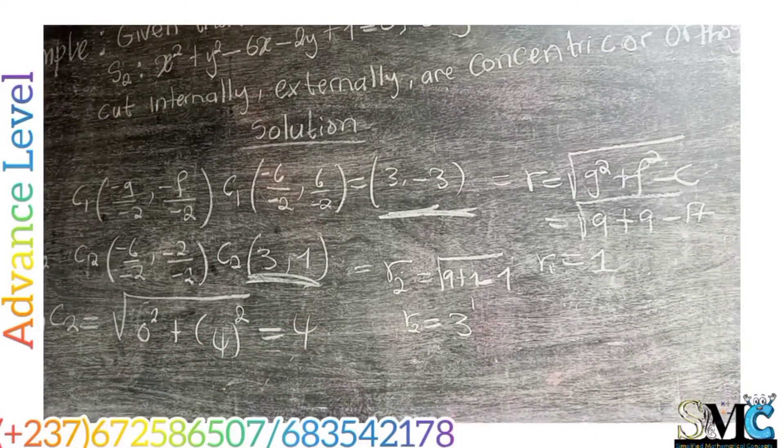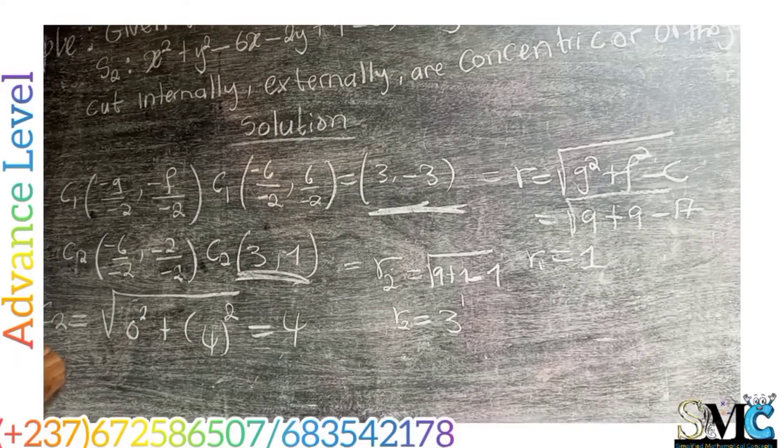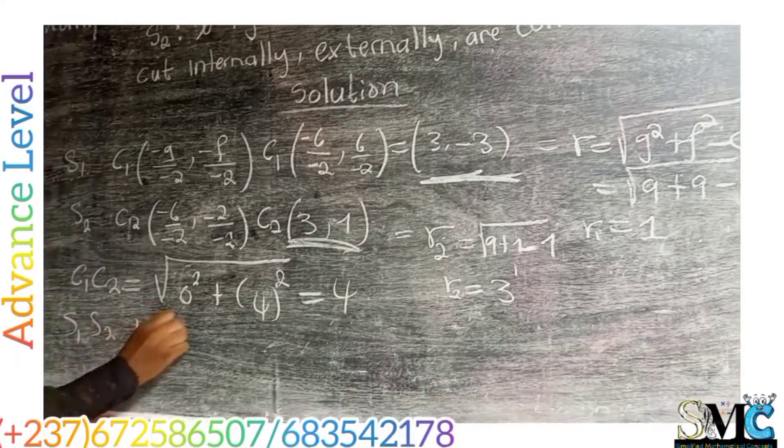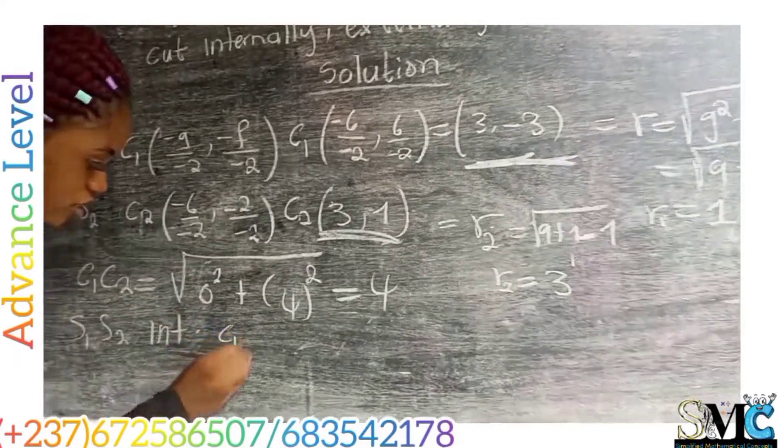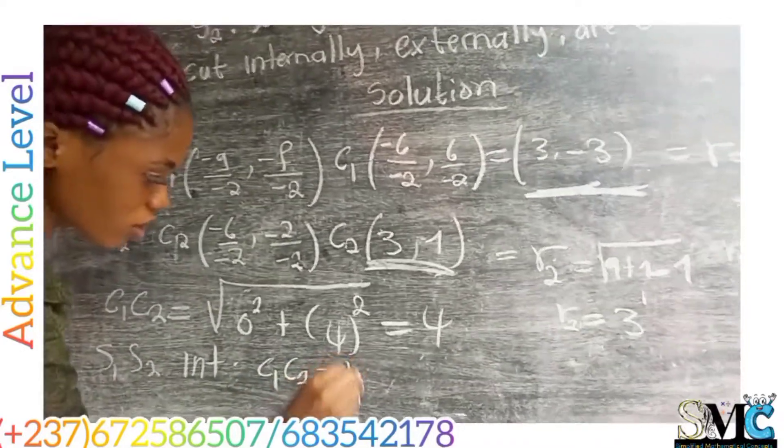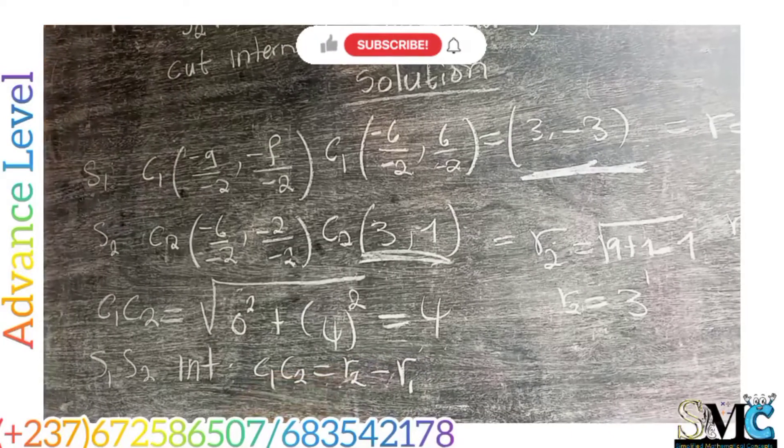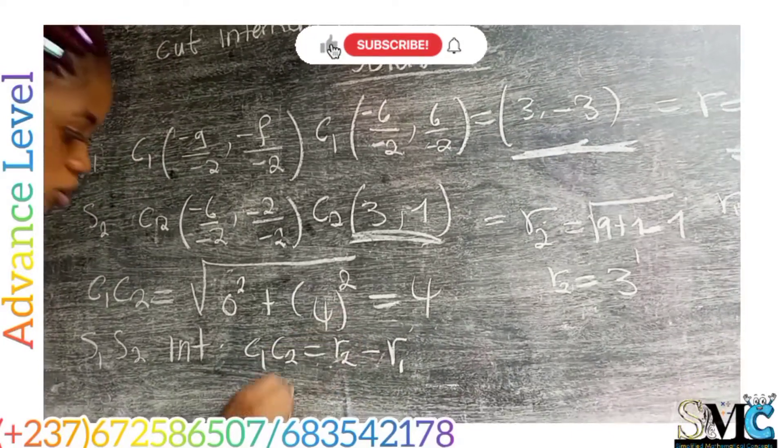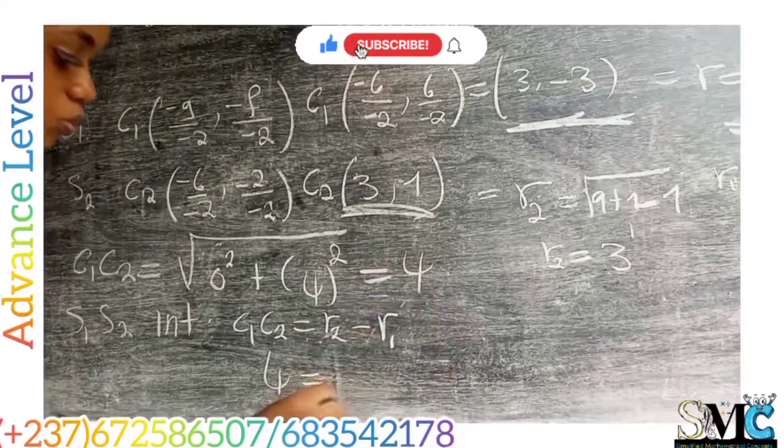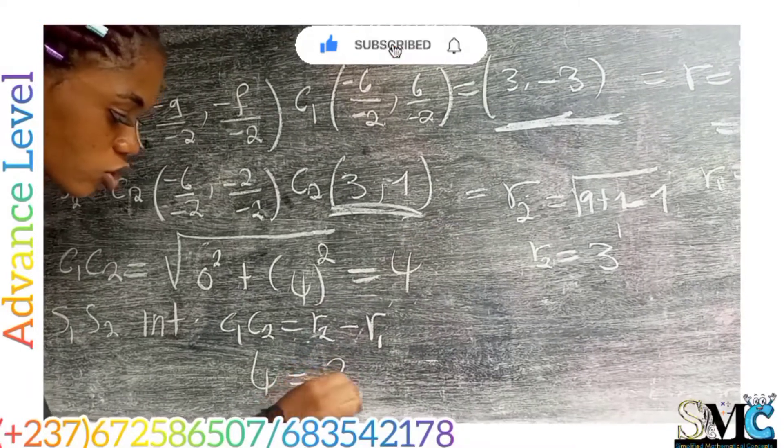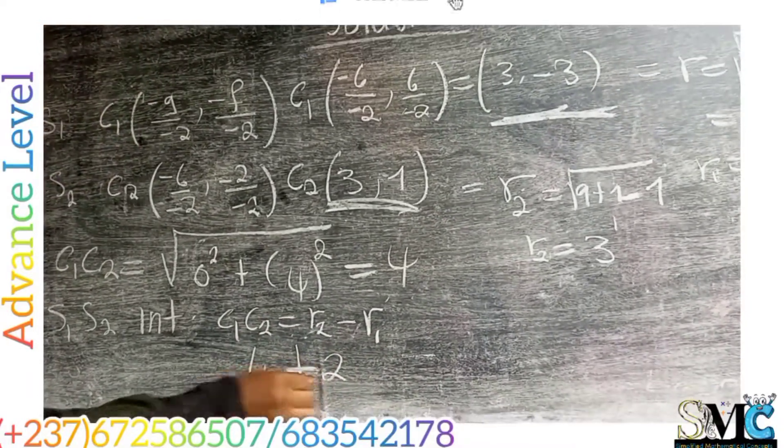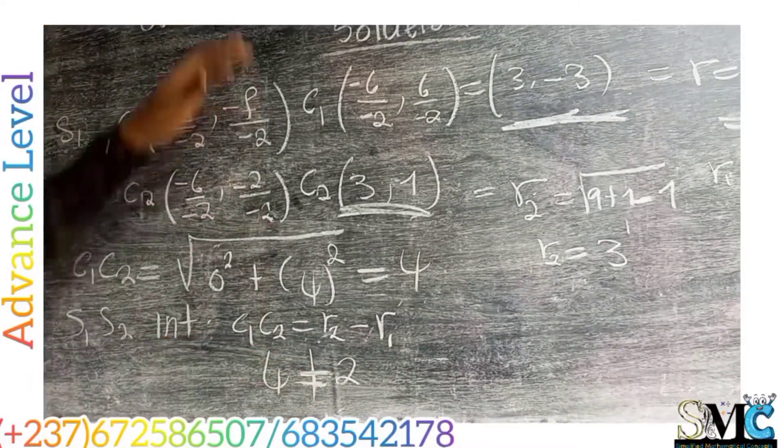So for the first one, if S1 and S2 touch internally, our condition is that C1, C2 should be equal to R2 minus R1. In this case, R2 is bigger than R1. So 4 should be equal to 3 minus 1, which is 2. But 4 is not equal to 2, so the two circles don't touch internally.